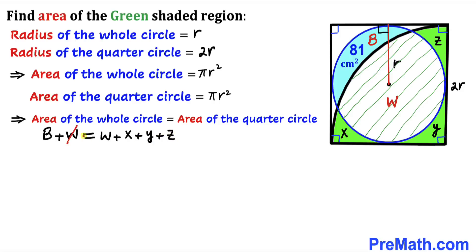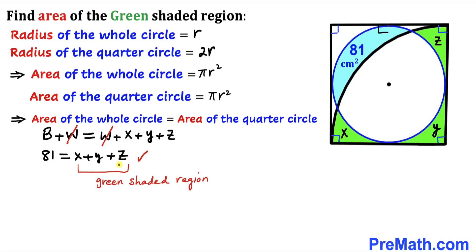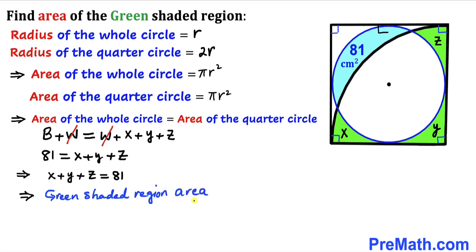Since both areas are equal, w cancels from both sides. We know b equals 81 centimeters square, so we replace b with 81. Therefore 81 equals x plus y plus z. Since x plus y plus z represents the entire green shaded region, the area of the green shaded region is 81 centimeters square.